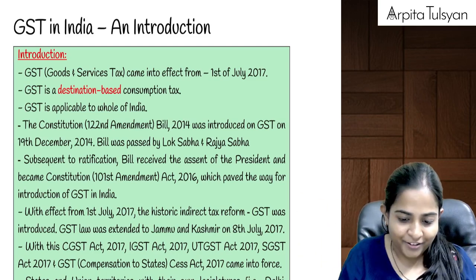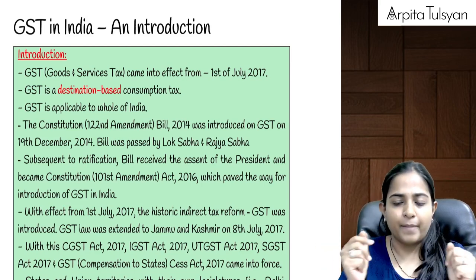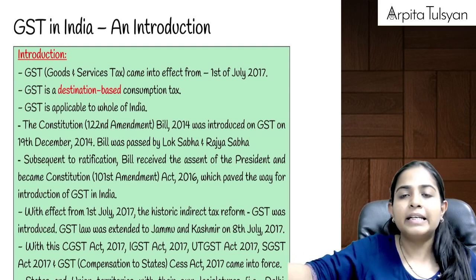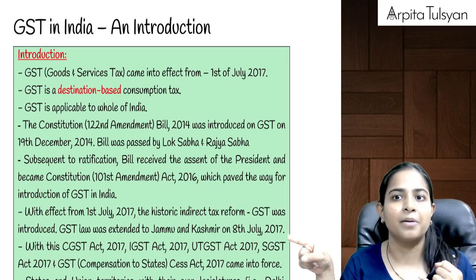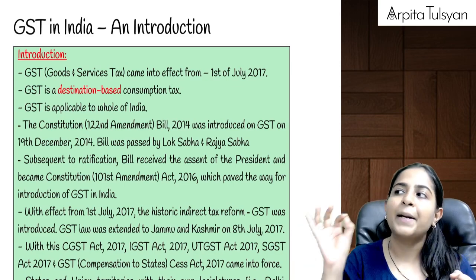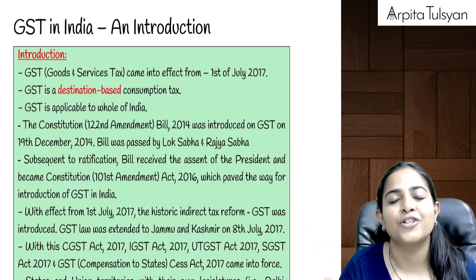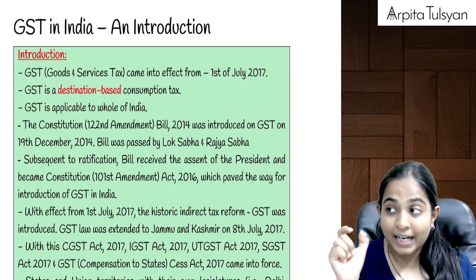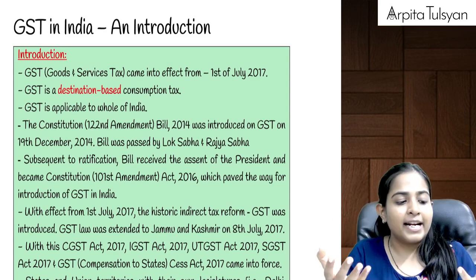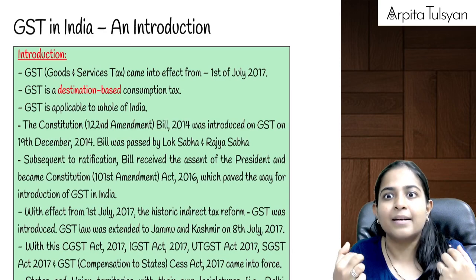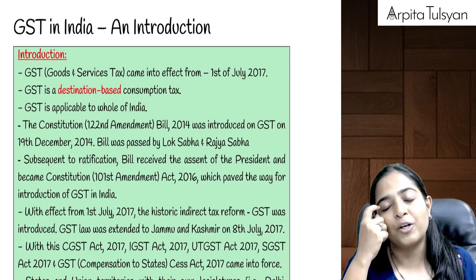It has to be a super quick revision. We will try to revise all the provisions in a concise manner. Now, the first chapter is GST in India and Introduction. Basic things we need to know: first of all, GST is a destination based tax — the revenue of GST should go to that particular state where the goods are going. Wherever is the final destination of the goods, the revenue should go to that particular state. Second, GST is a consumption based tax. The customer is spending something on goods or services, and on that, the customer is required to pay the GST.